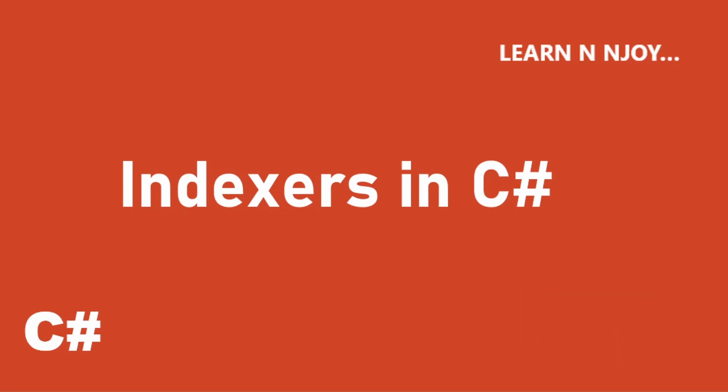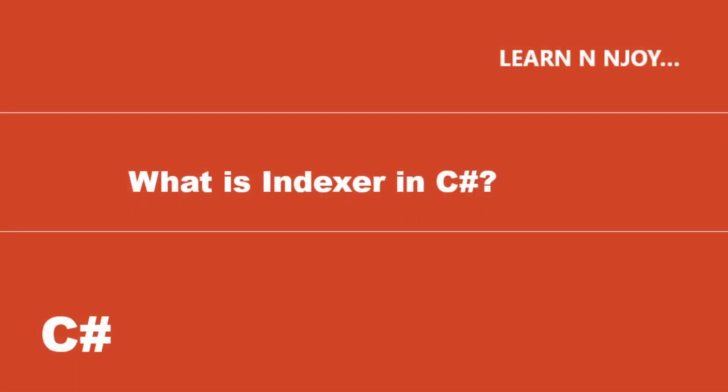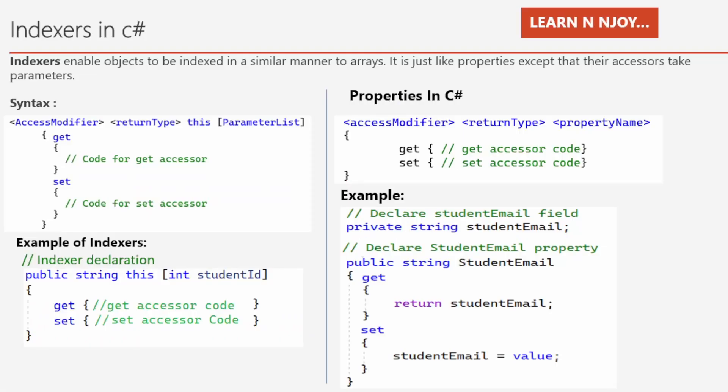What are indexers in C#? Indexers enable objects to be indexed in a similar manner to arrays. For example, suppose we have an int array called obj_int_array with five elements. If you want to fetch data from it at position two, you write obj_int_array[1], which gives the second element based on position, since array indexes start with zero. We use indexers to provide similar flexibility for user-defined objects.